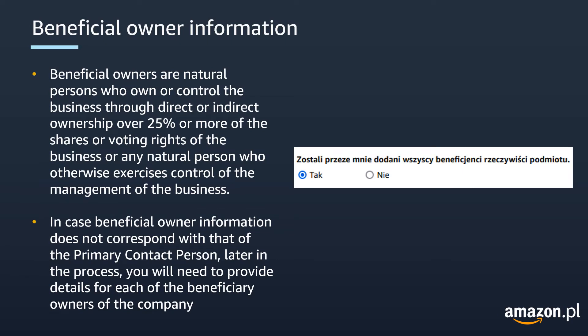After that, you will have the option to specify beneficial owner information. Beneficial owners are natural persons who own or control the business through direct or indirect ownership of over 25% of the shares or voting rights of the business. Otherwise, it can also be any natural person who exercises control of the management of the business.